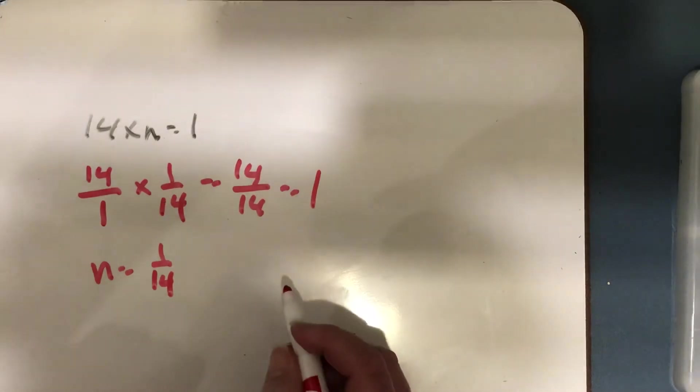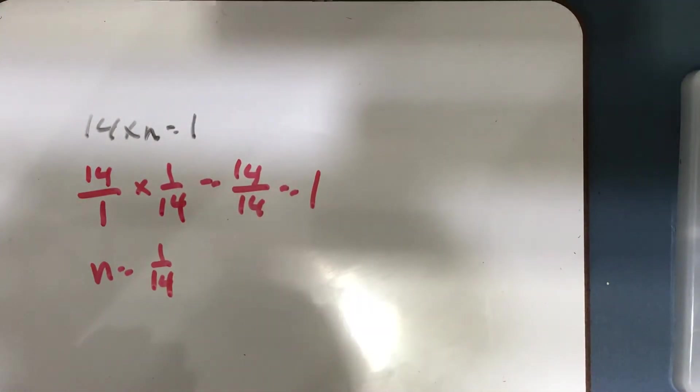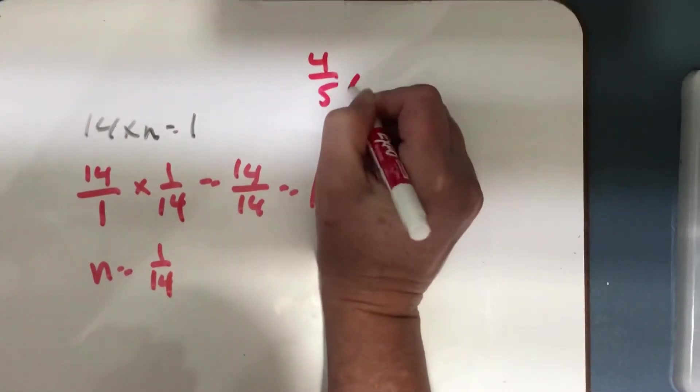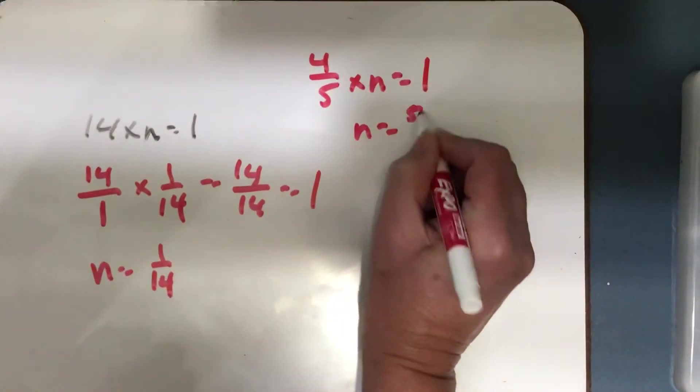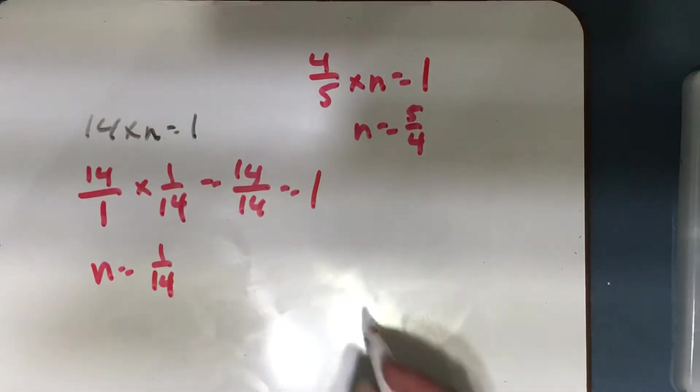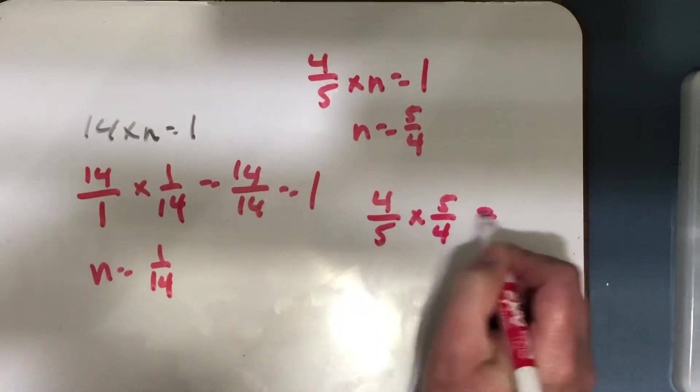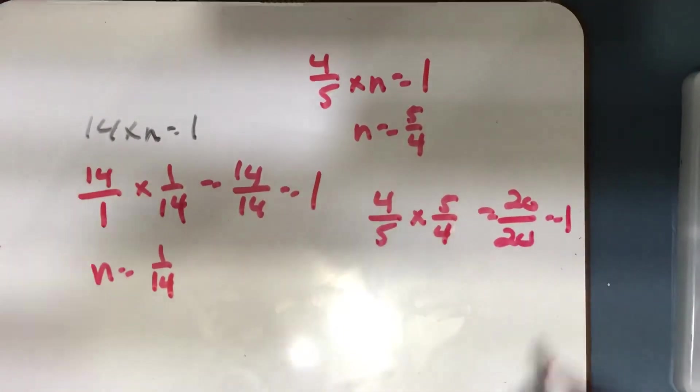And let's see. Let me do number 25. 25 says 4/5 times n equals 1. Well, n would equal 5/4. Remember, if I multiply 4/5 times 5/4, 4 times 5 is 20, 5 times 4 is 20, which equals 1.